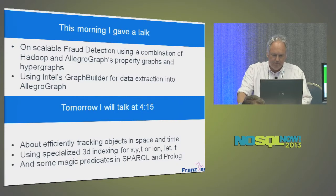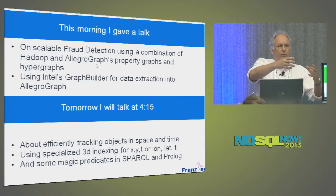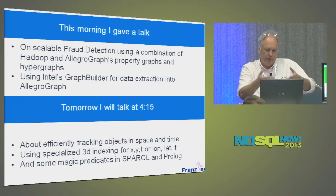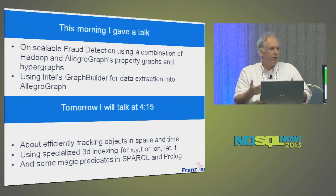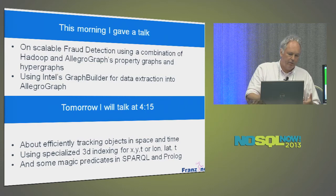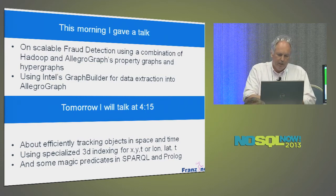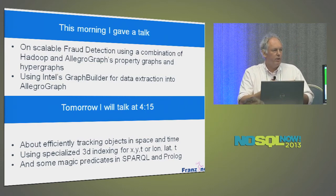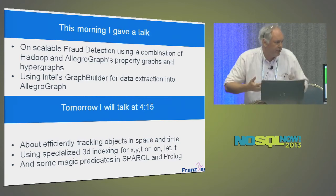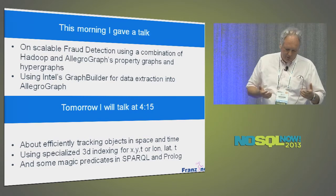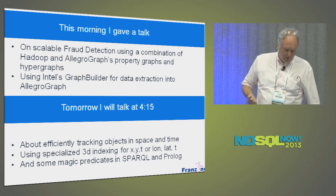This morning I talked about how we used Hadoop to extract data from this bank, put it into Allegrograph, and do analysis. We're now working with Intel to make it easier to get these graphs out of Hadoop. Tomorrow I'll talk more about geospatial indexing, and especially how — when you have moving objects in your database — you can find them as quickly as possible. Thank you very much.